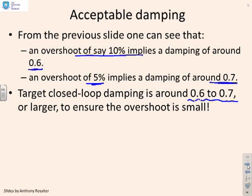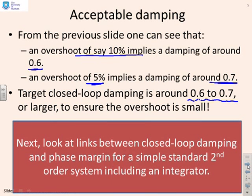The target closed-loop damping is probably 0.6 to 0.7, because if you made the damping bigger, although the overshoot would be smaller, you may be too cautious.